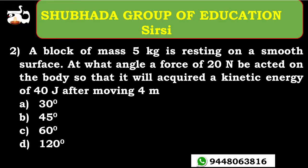Next problem: a block of mass 5 kg is resting on a smooth surface. At what angle should a force of 20 newtons be applied on the body so that it will acquire a kinetic energy of 40 joules after moving 4 meters? This is a simple problem. The surface is smooth, meaning there is no friction.